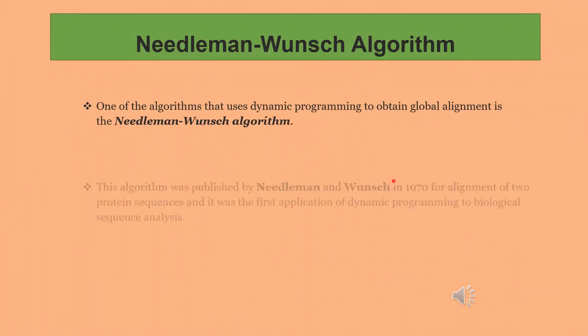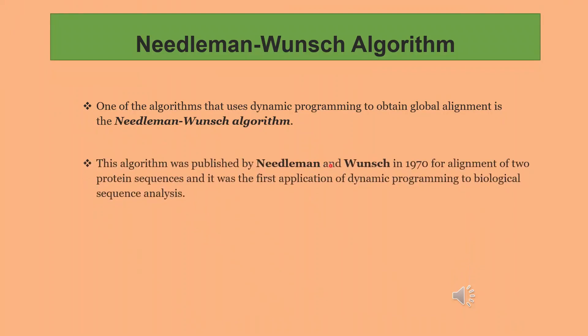We can see now Needleman-Wunsch algorithm. One of the algorithms that uses dynamic programming to obtain global alignment is the Needleman-Wunsch algorithm. This algorithm was published by Needleman and Wunsch in 1970 for alignment of two protein sequences and it was the first application of dynamic programming to biological sequence analysis. The Needleman-Wunsch algorithm finds the best scoring global alignment between two sequences.